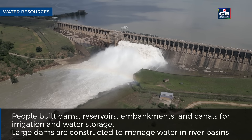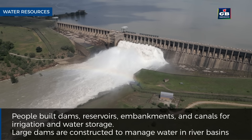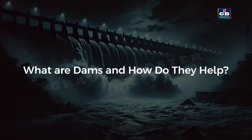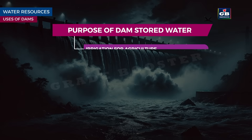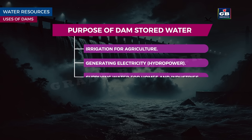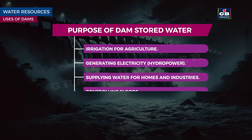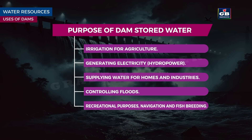Large dams are constructed to manage water in river basins. Dams block rivers to store water which can be used for: irrigation for agriculture, generating electricity through hydropower, supplying water for homes and industries, controlling floods, recreational purposes, navigation, and fish breeding.